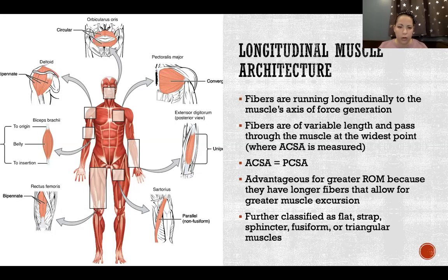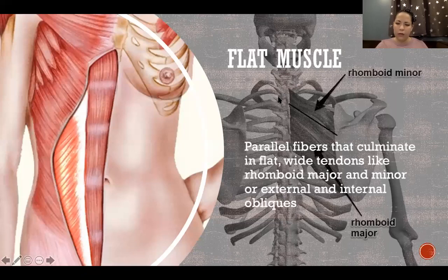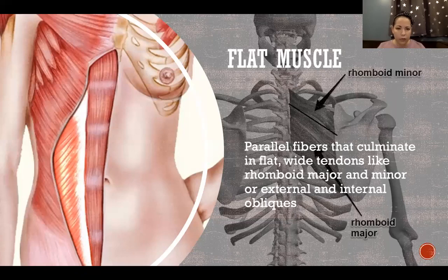Longitudinal muscles are further classified as flat, strap, sphincter, fusiform, or triangular. A flat muscle has parallel fibers that culminate in flat, wide tendons. Examples include rhomboid major and minor and the external and internal obliques. The fibers run in the same direction as the axis of force generation, making them longitudinal, but they're broader and flatter, ending in broad flat tendons rather than one narrow tendon.